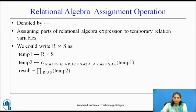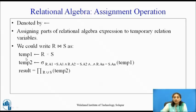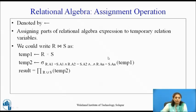The next operation is the assignment operation. Sometimes we want to store the result of a relational algebra expression temporarily, similar to assignment in programming languages. It is denoted by a backward arrow. For example, to compute natural join: first perform the Cartesian product and assign the result to temp1; then apply selection on common attributes and store in temp2 — which gives the 10 matching records from 100; then project the desired attributes.